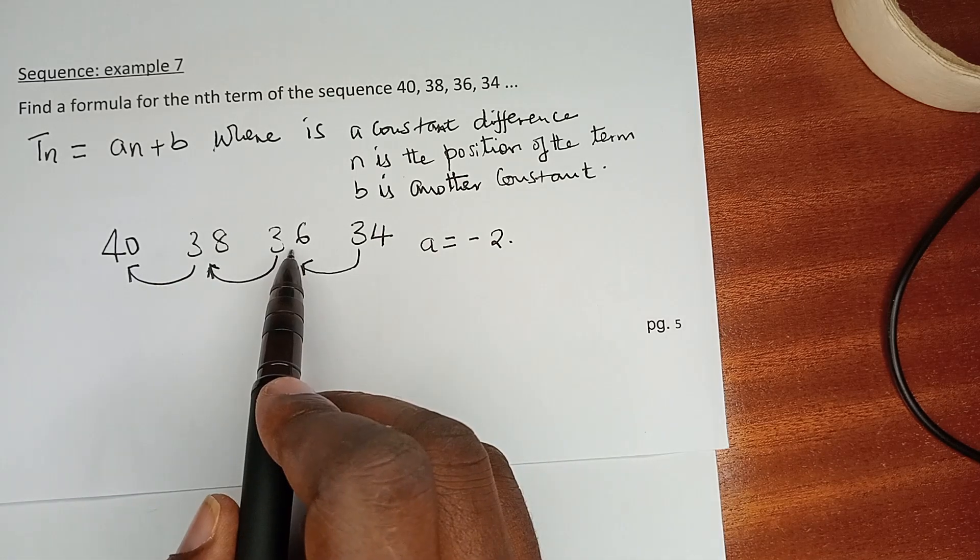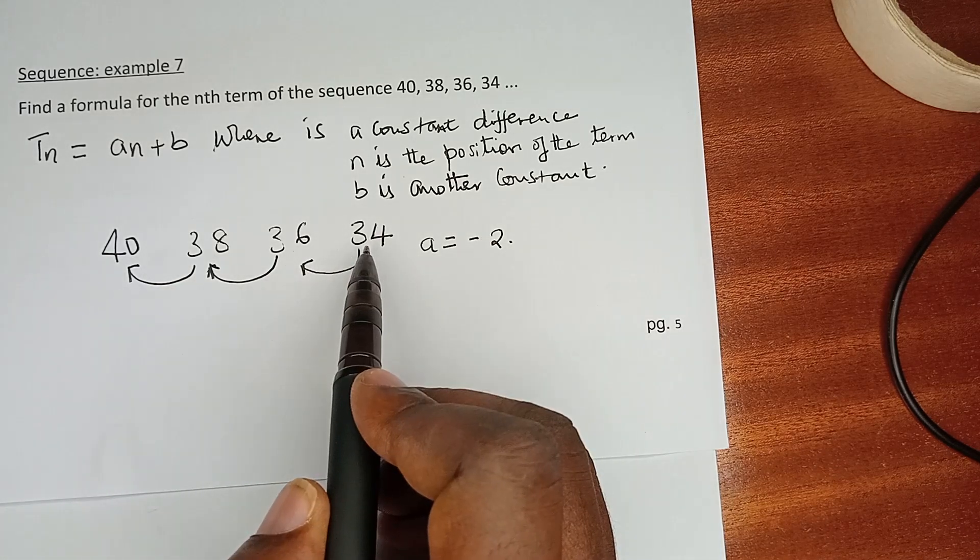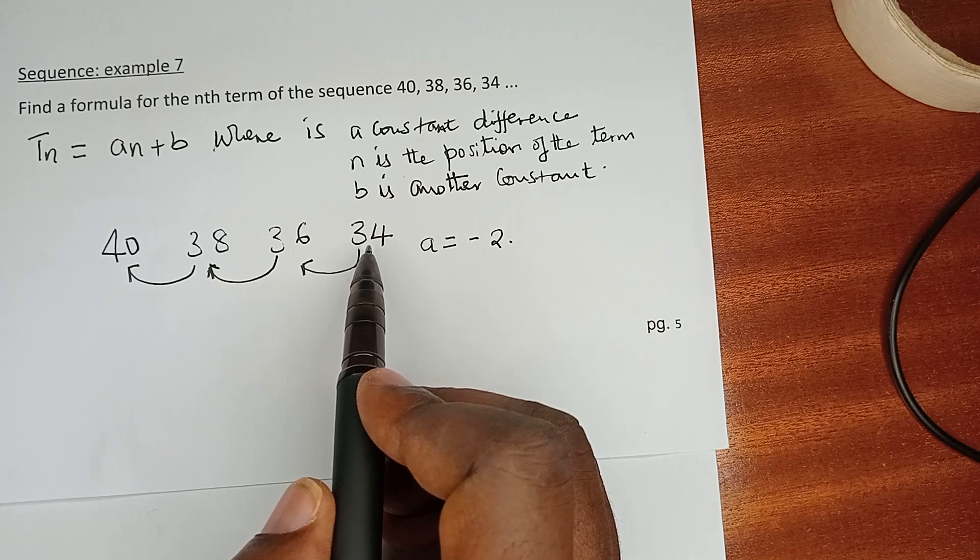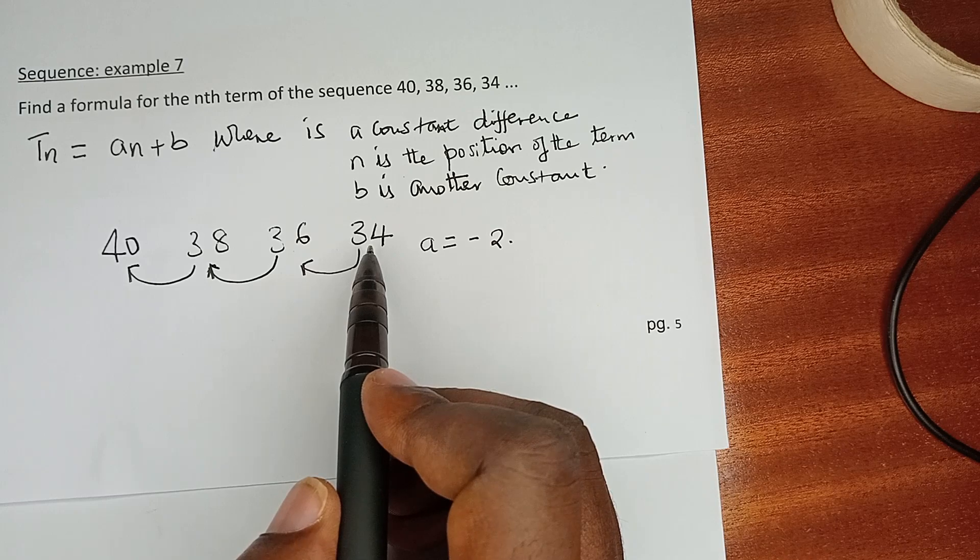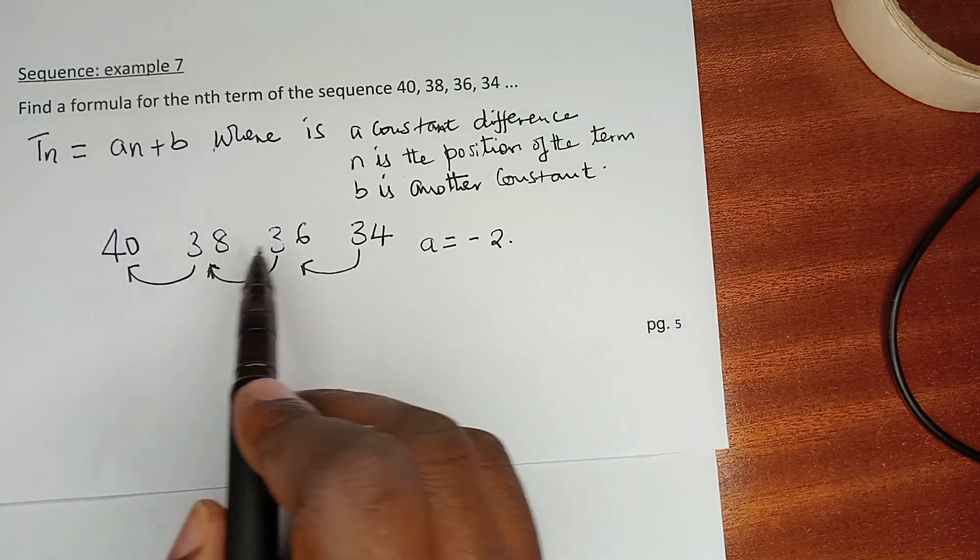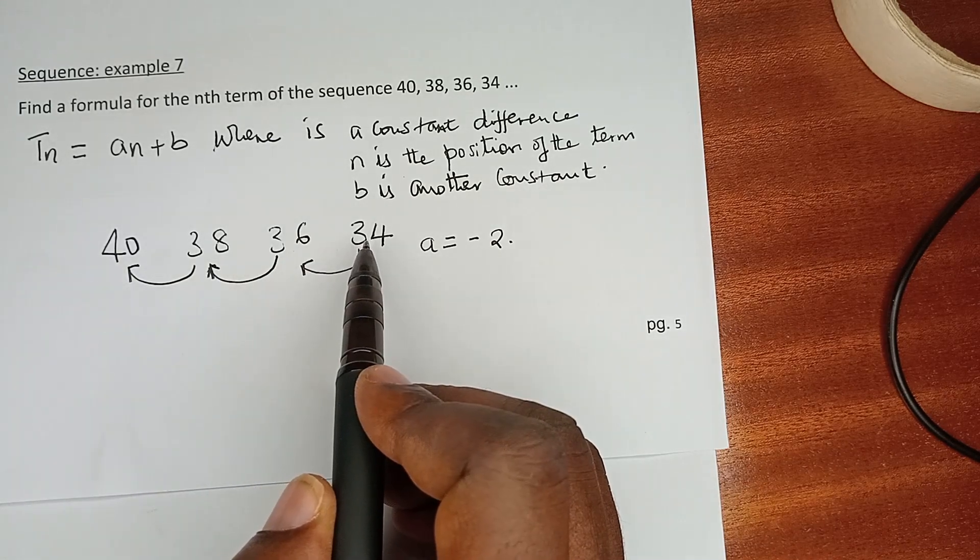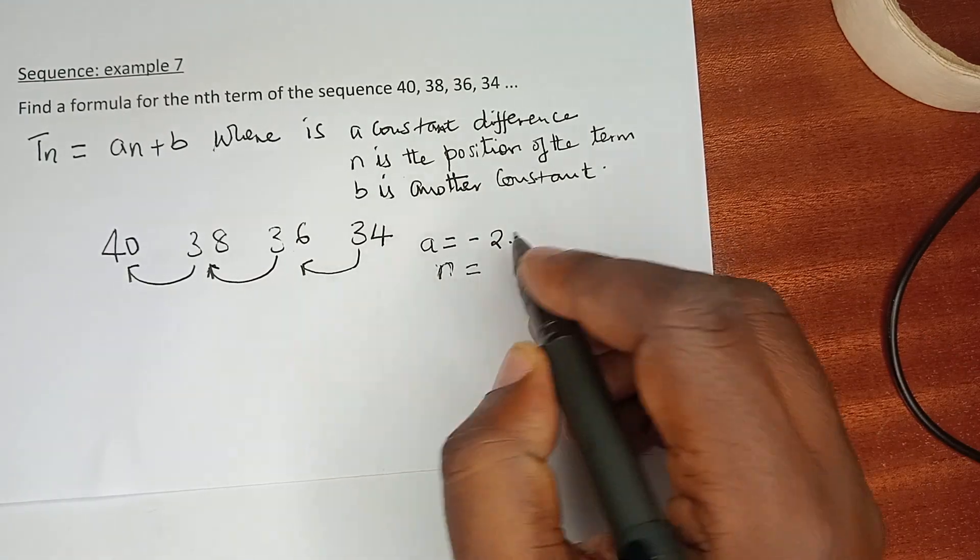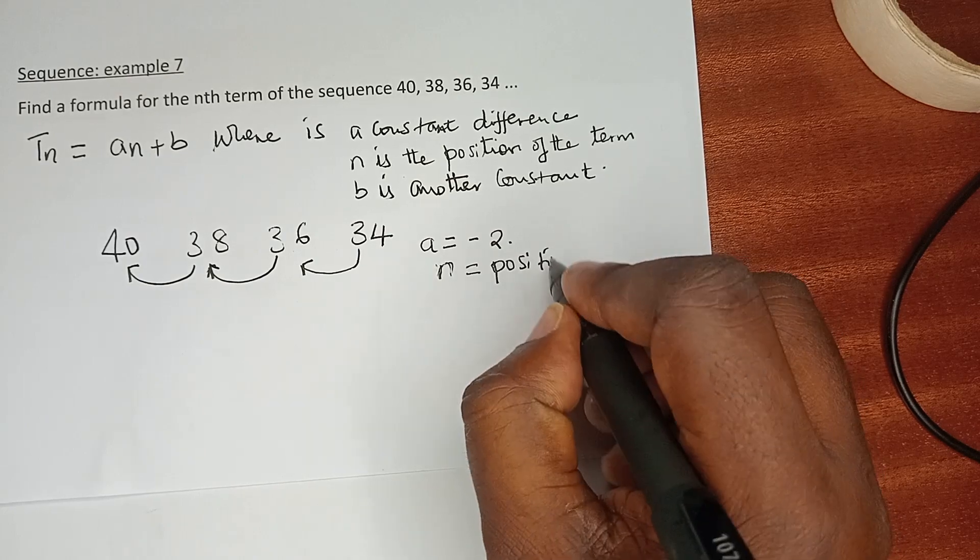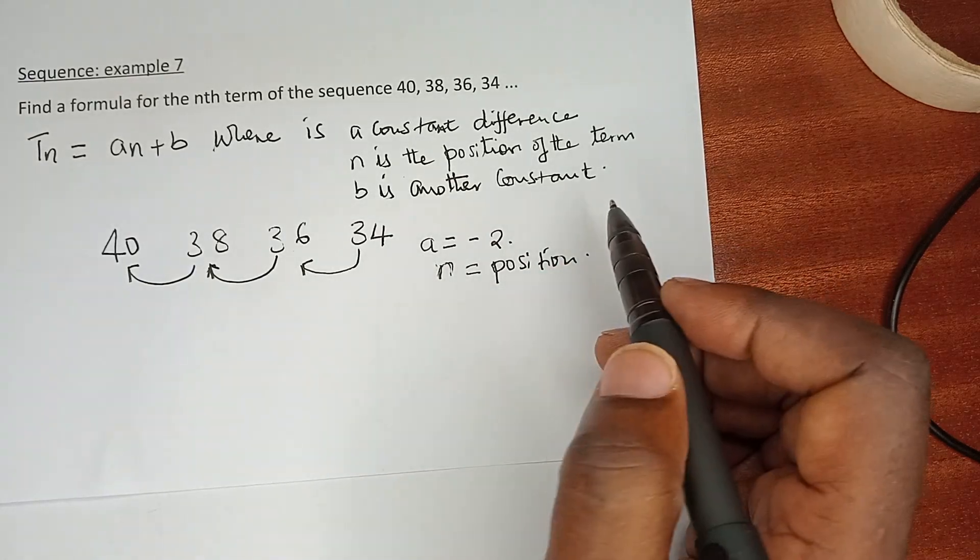Here n is going to be 3, and if you are going to use 34, n is going to be just 4 because 34 is in the 4th position—1, 2, 3, 4. It's actually the fourth term. So n is the position, and we have highlighted there it is the position.